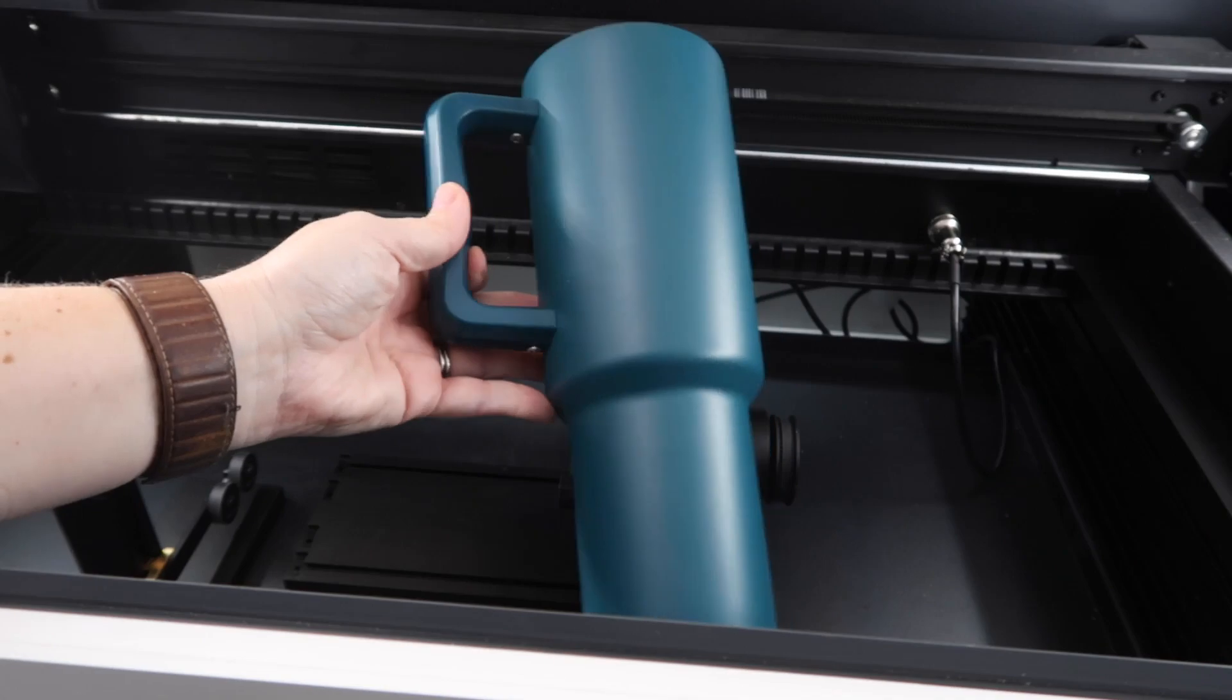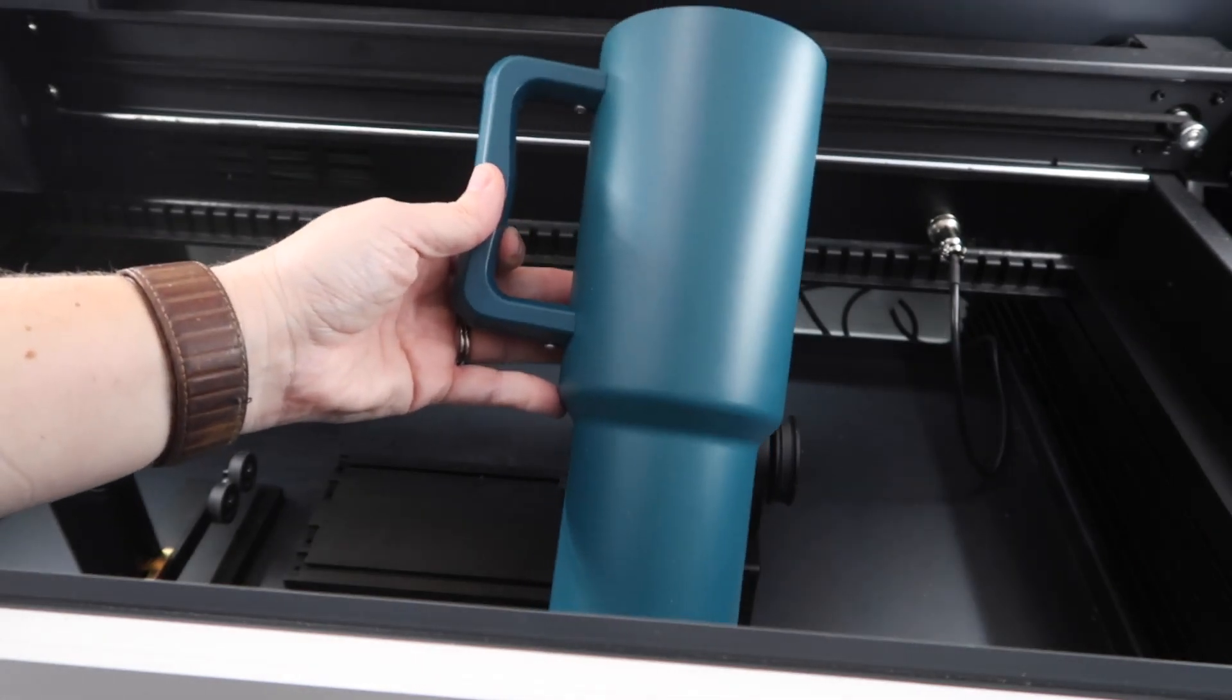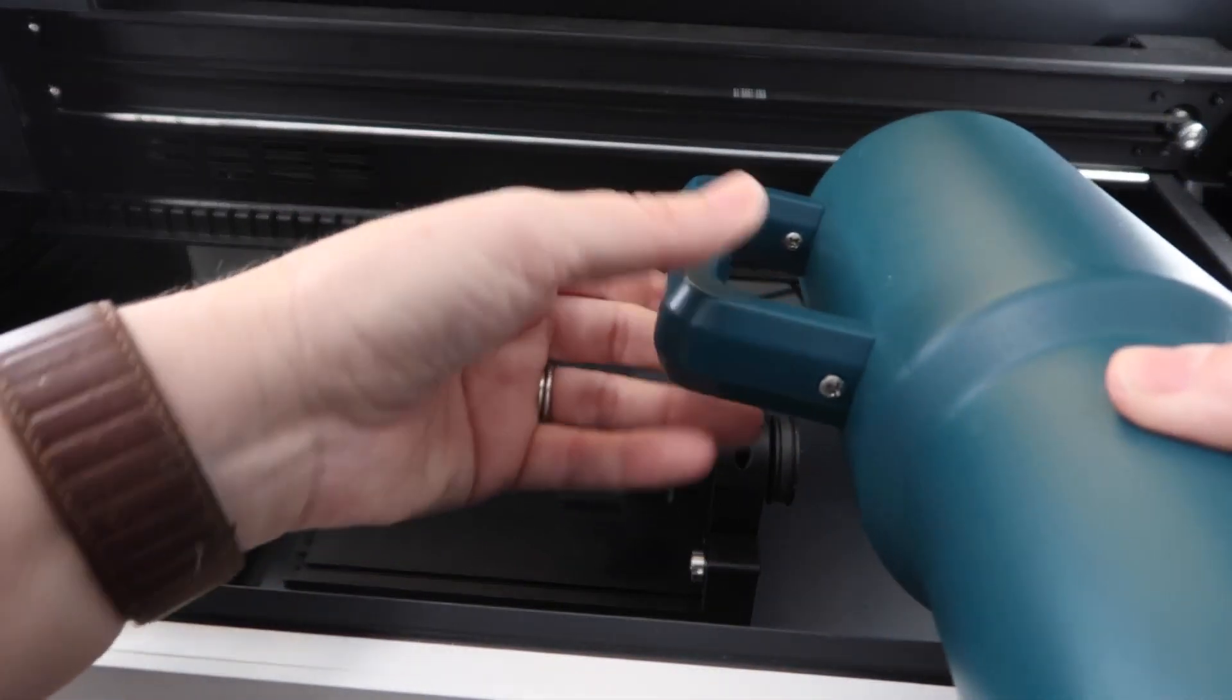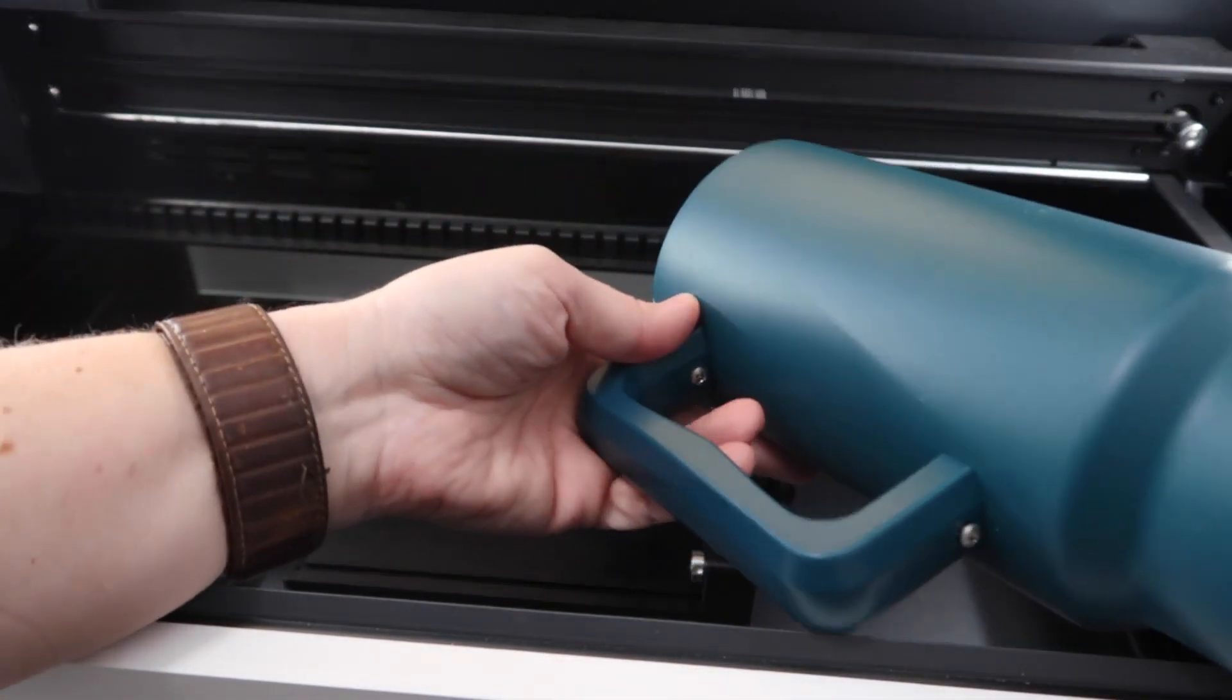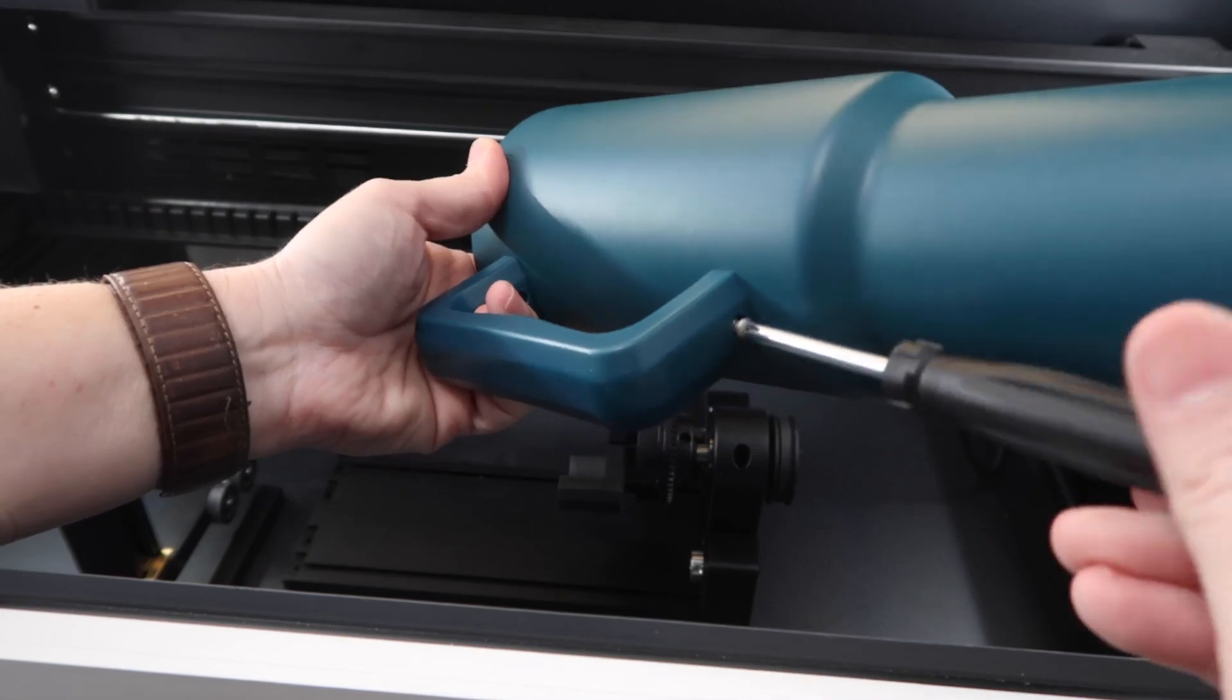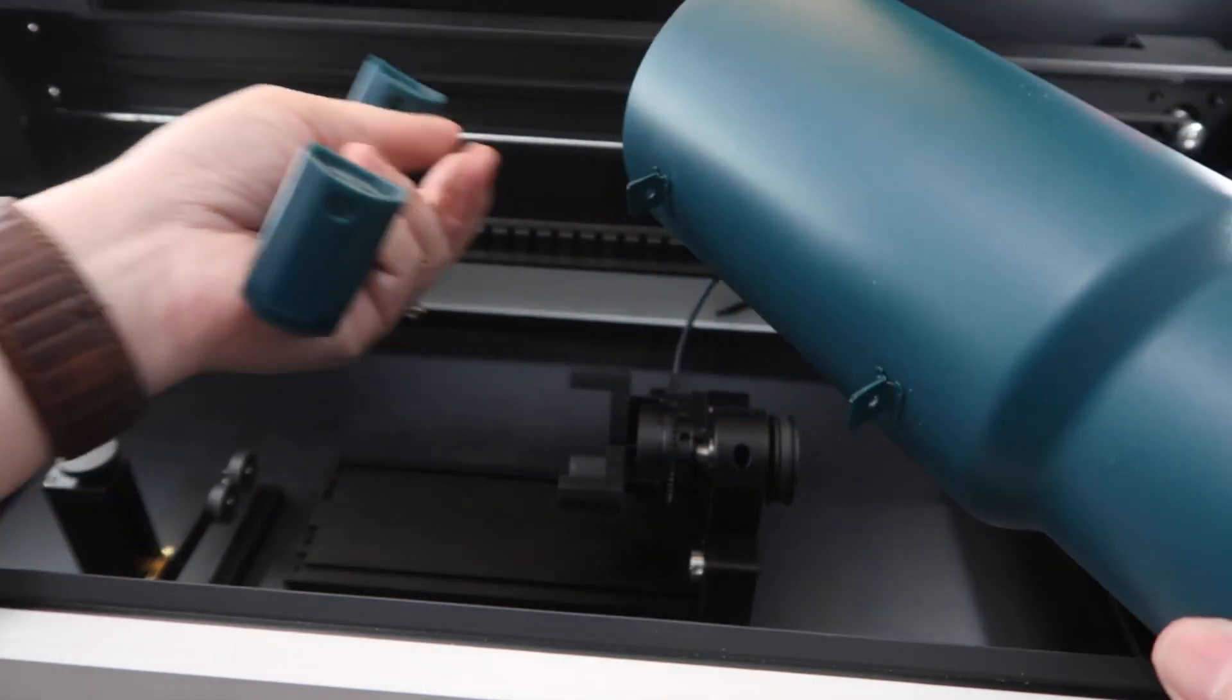Before we set the tumbler in the machine, you need to remove the handle. On these types of tumblers, you'll see two screws under the handle that come out, and then you can pull the handle off. With the tumbler ready, you can now put it in the rotary.